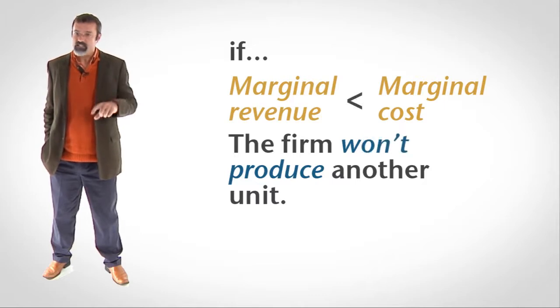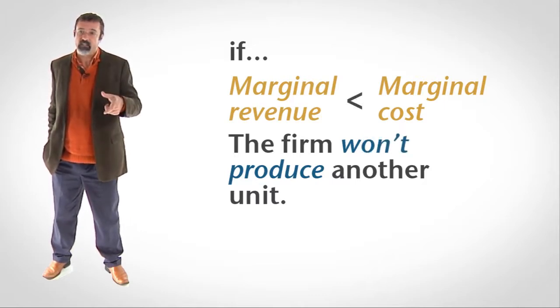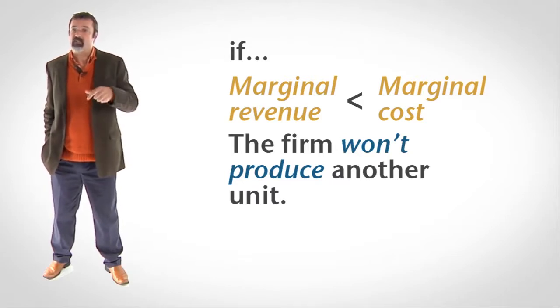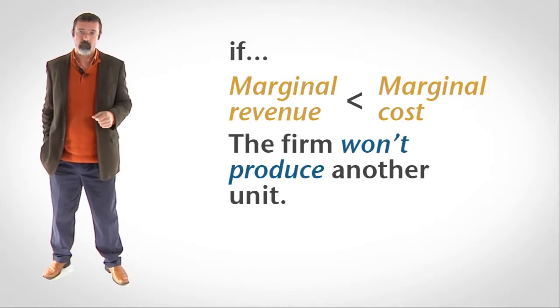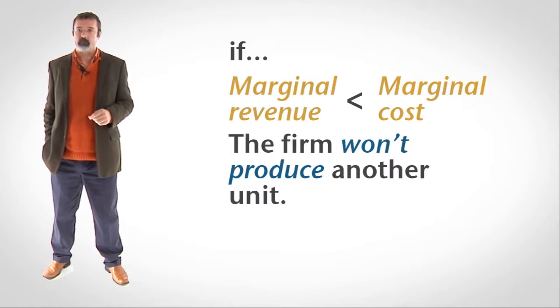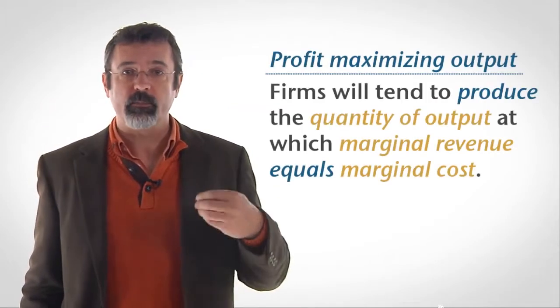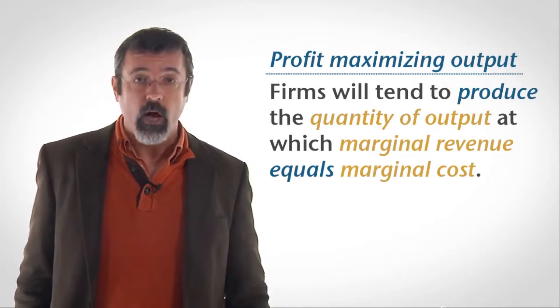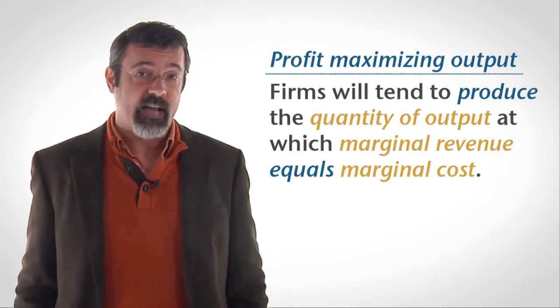If marginal revenue is less than marginal cost, then the revenue the firm loses from selling one less unit of output is less than the cost the firm saves from not producing that unit. So if the firm produces and sells one less unit, its profit will increase. If marginal revenue equals marginal cost, then the firm is producing and selling the right quantity of output. We call this the profit-maximizing output level.